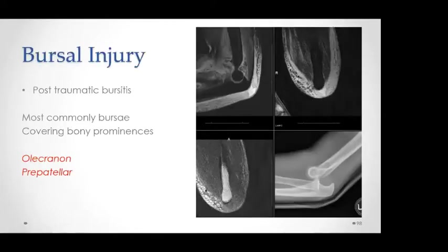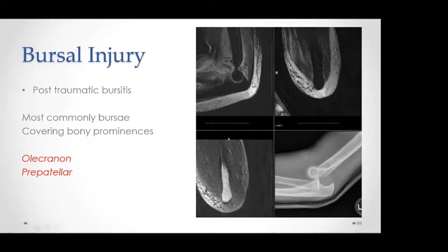Bursal injuries are seen in bursae covering bony prominences such as the olecranon bursa or prepatellar bursa. This patient suffered posterior dislocation of the elbow joint and shows hemorrhagic bursitis of the olecranon bursa.